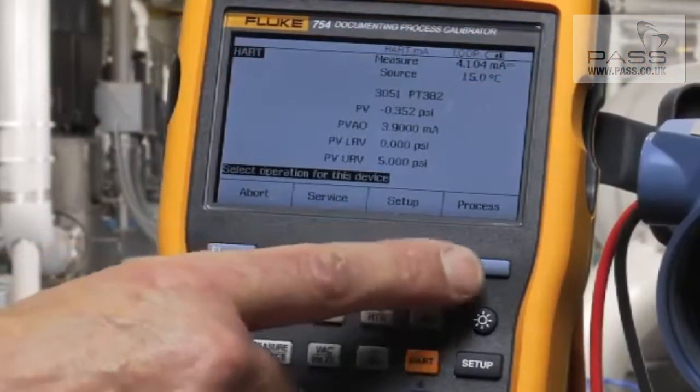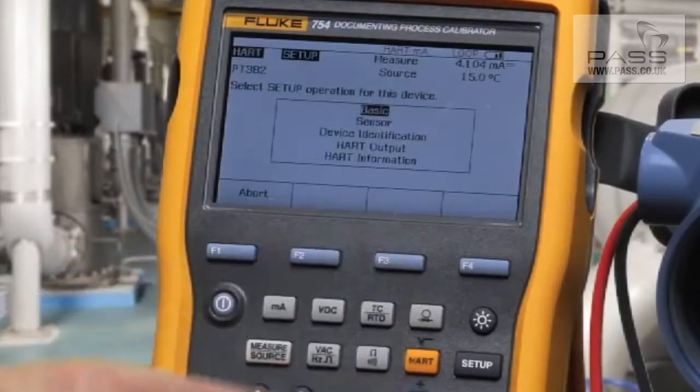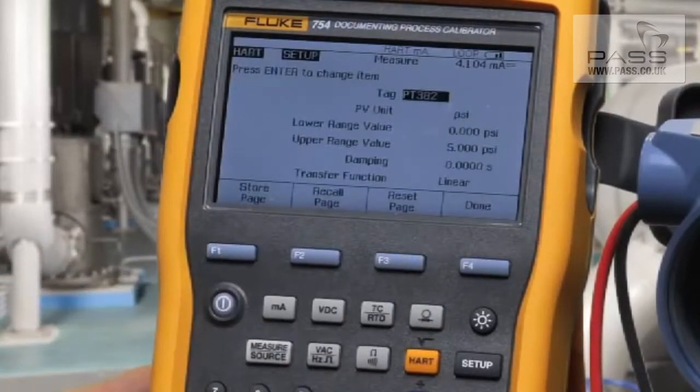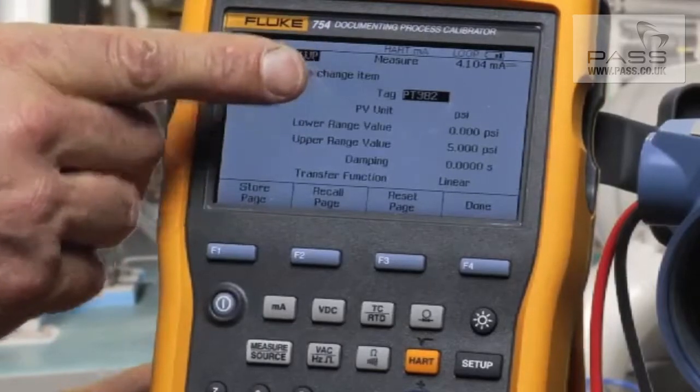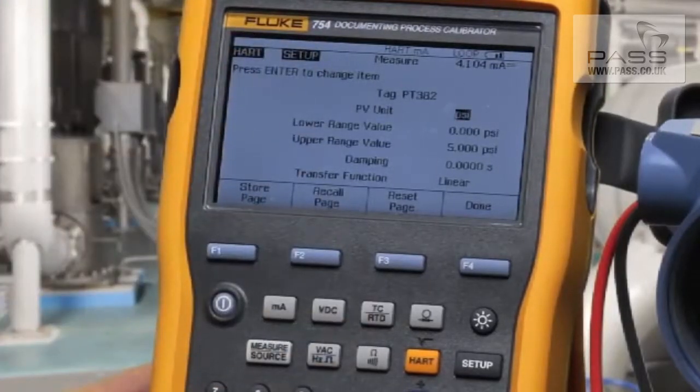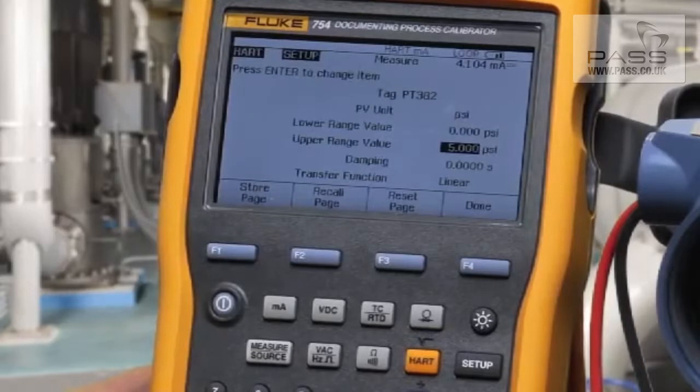To configure the transmitter, we can go into Setup, press Enter to Select Basic. We can see the tag, the PV units. We can change the tag, the PV units, and the ranging of the transmitter.